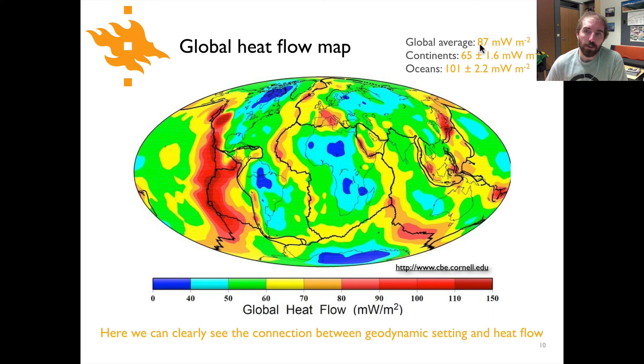And so we can clearly again see this relationship between heat flow and the geodynamic setting. To give you some numbers, a global average heat flow is about 87 milliwatts per square meter. Continents have heat flow typically somewhere around 65 milliwatts per square meter or so, and oceans it's closer to about 100 milliwatts per square meter for the heat flow.